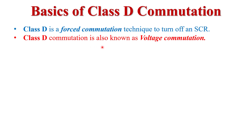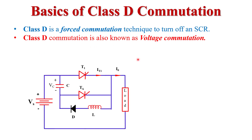Class D commutation is also known as voltage commutation. Because in Class D commutation, if we want to turn off the main thyristor, we apply a reverse bias voltage across it and the thyristor gets turned off. That is why it is called voltage commutation.